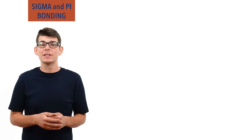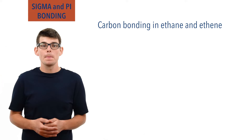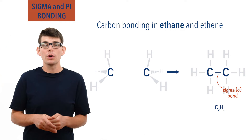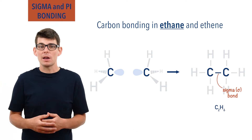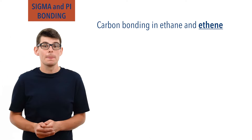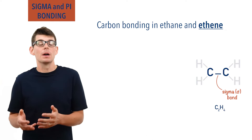At this level, the carbon bonding in ethane and ethene is often used to model sigma and pi bonding. In ethane, the carbon atoms are bonded by the direct overlap of two orbitals — a sigma bond. Each carbon atom has three bonds to hydrogen atoms, and this leaves one half-filled P-shaped orbital left over. The carbon atoms arrange themselves in such a way that enables the P-shaped orbitals to overlap. In ethene, the carbon atoms are again bonded by a sigma bond as well as a sideways overlap of two other orbitals — a pi bond.